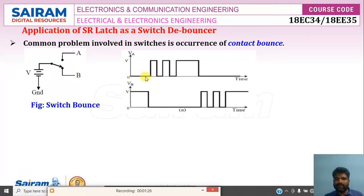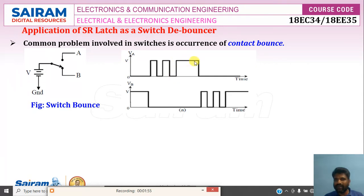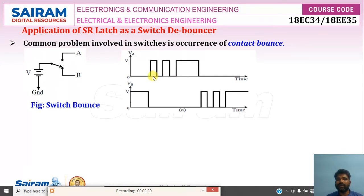The corresponding waveform: initially A is zero because there is no contact, and B is giving you plus five volts or twelve volts. When it changes from B to A, A becomes 5 volts but again loses the contact. When it gives contact it becomes zero, again goes there and loses contact, then it settles. When it loses contact with B, B becomes zero and it never comes back to B. It goes to A and loses contact but never returns to B. This portion is called contact bounce.